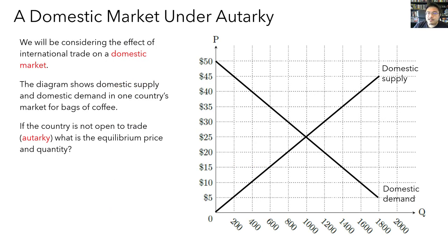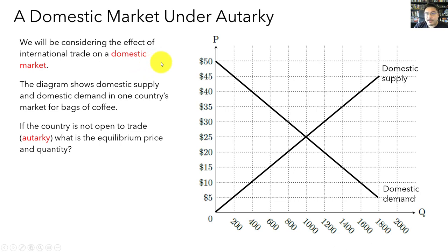For the majority of this lecture, we're going to be thinking about the effect of international trade on a domestic market. When we say domestic market, what we mean is the market for a good — the consumers and the producers of that good within a single country — and how opening up to trade affects those consumers and producers. To study the effects of international trade on a domestic market, we have to start by thinking about what would happen in the domestic market if there was no trade. We have a specific word for that: autarky. If a country is not open to trade, then we say that the country is in autarky.